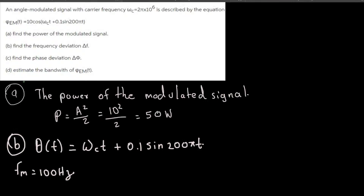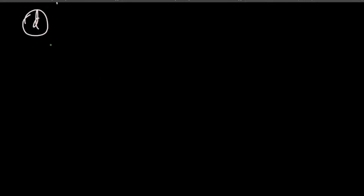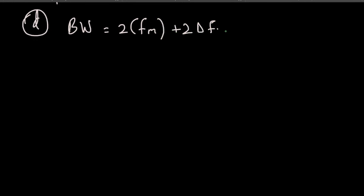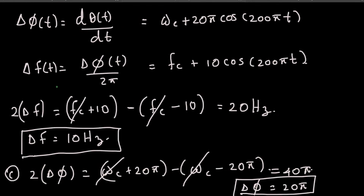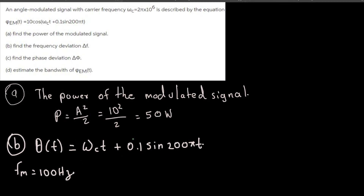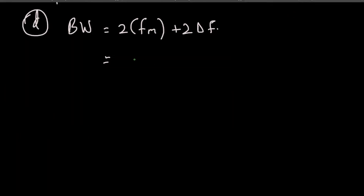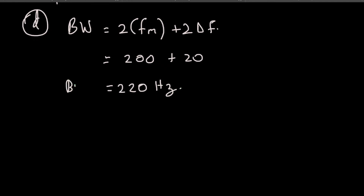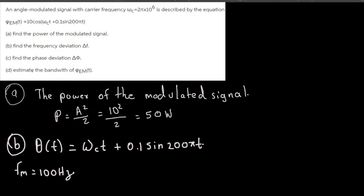Part (d) asks us to estimate the bandwidth of φ_m(t). Bandwidth is calculated using BW = 2f_m + 2Δf. We found f_m = 100 Hz, so 2f_m = 200. We found Δf = 10 Hz, so 2Δf = 20. Total bandwidth = 200 + 20 = 220 Hz.